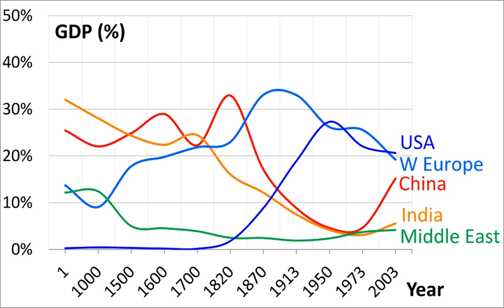There is no doubt that our grievances against the British Empire had a sound basis. As the painstaking statistical work of the Cambridge historian Angus Madison has shown, India's share of world income collapsed from 22.6% in 1700, almost equal to Europe's share of 23.3% at that time, to as low as 3.8% in 1952. Indeed, at the beginning of the 20th century, the brightest jewel in the British crown was the poorest country in the world in terms of per capita income. According to British economist Angus Madison, India's share of the world economy went from 24.4% in 1700 to 4.2% in 1950.